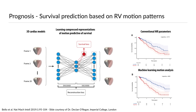The idea here was that the network learned compressed representations of motion that were predictive of survival. This was a very powerful approach that improved upon the conventional approach, as we can see in the survival curves. The top curve shows survival curves based on ejection fraction — the conventional MR parameter — and below this you see the machine learning motion analysis prediction. This is better able to identify patients who do relatively well versus those who have a very poor prognosis, making it of immediate clinical benefit in patients with pulmonary hypertension.